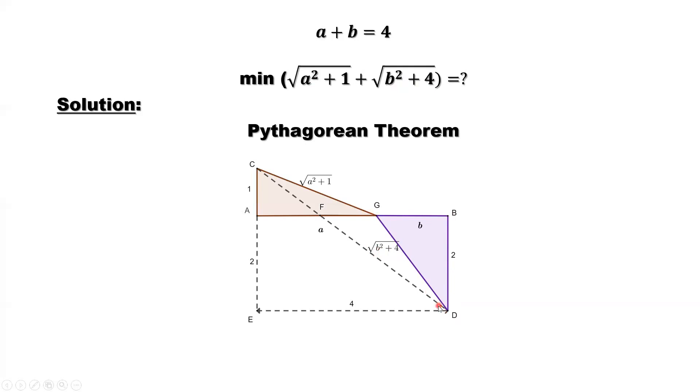What is the question? The question is, we want to find the minimum value of the sum of 2 hypotenuses. One is here, the second is here.